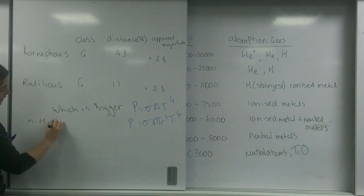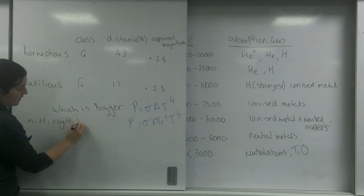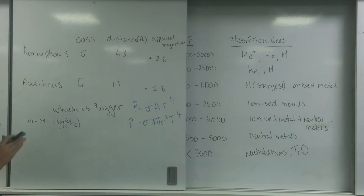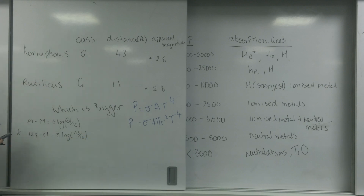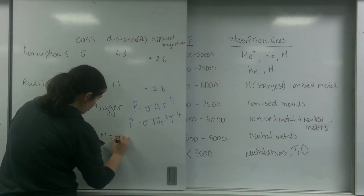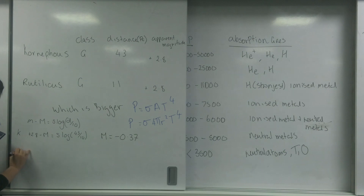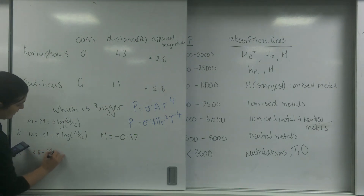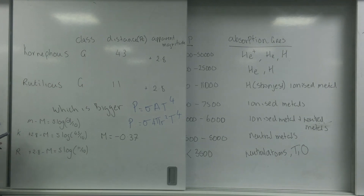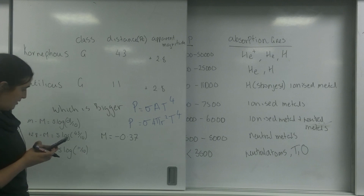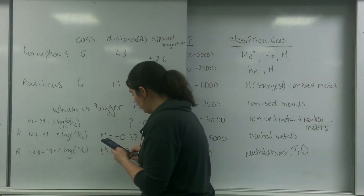Using the distance modulus formula: m minus M equals 5 log D over 10. For Cornifos: 2.8 minus M equals 5 log of 43 over 10, giving M equals minus 0.37. For Rutilicus: 2.8 minus M equals 5 log of 11 over 10, giving M equals plus 2.6.